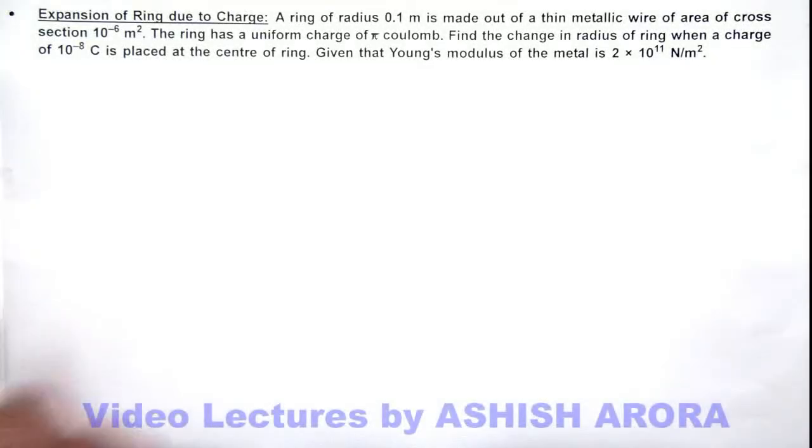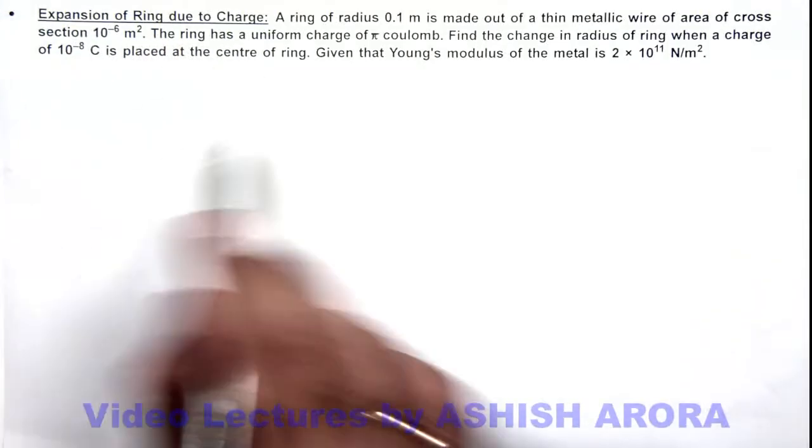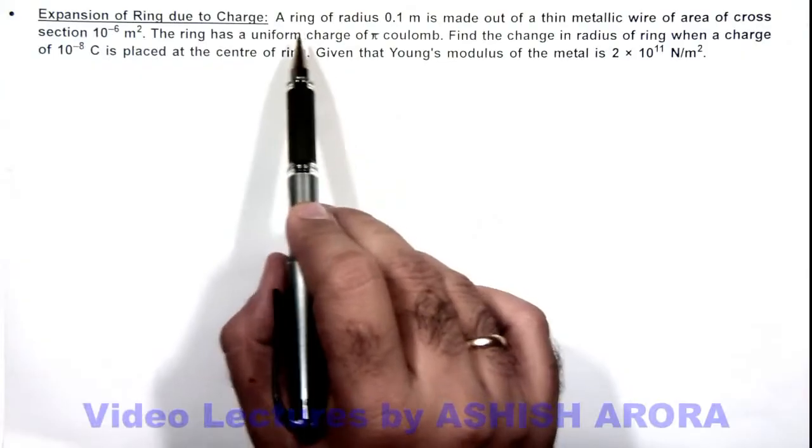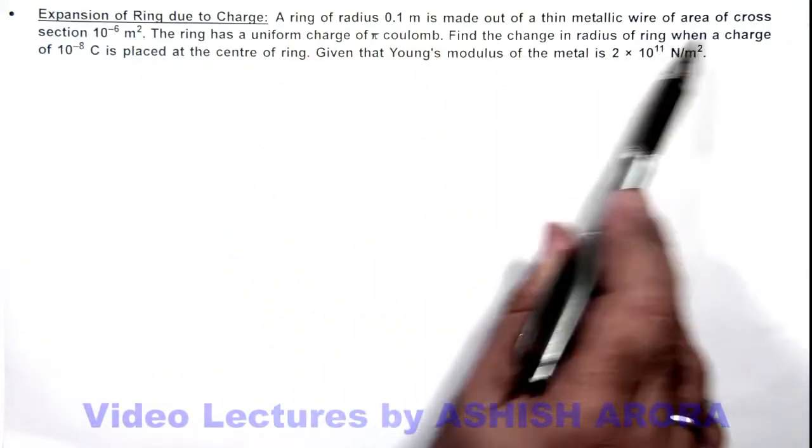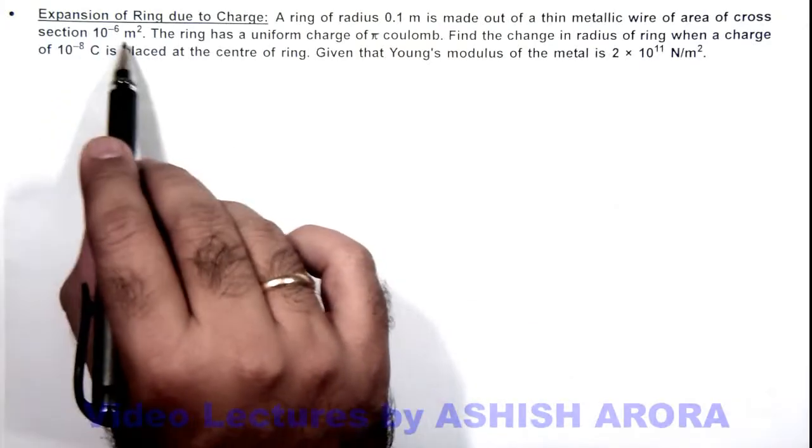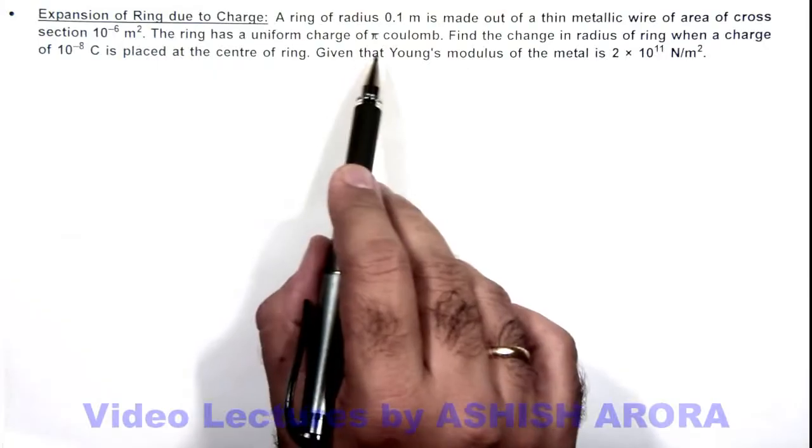In this illustration, we are required to find the expansion of a ring due to a charge. Here it is given that a ring of radius 0.1 meter is made out of a thin metallic wire of area of cross section 10 to power minus 6 meter square.